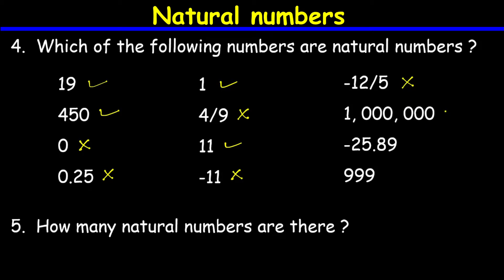1 million is a natural number. Negative 25.89 is not a natural number because it is both a decimal and negative. 999 is a natural number. Therefore the natural numbers from the list are: 19, 450, 1, 11, 1 million, and 999.